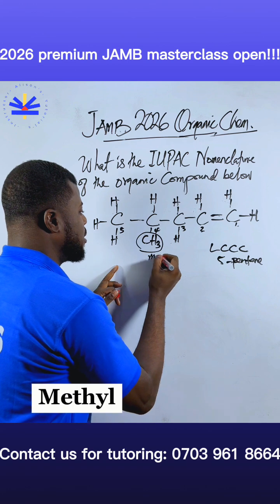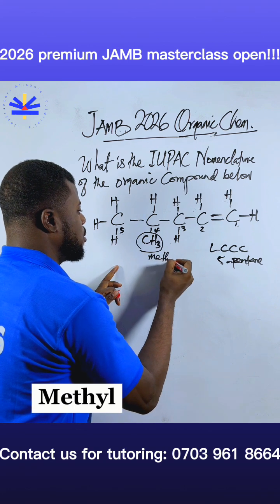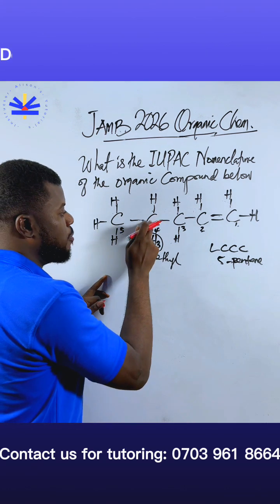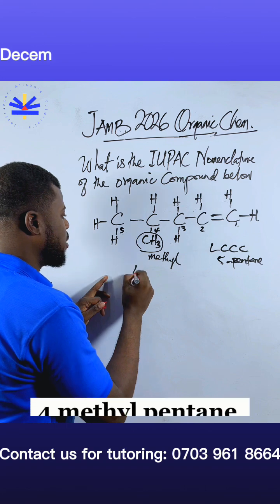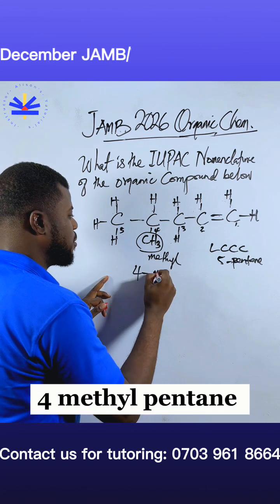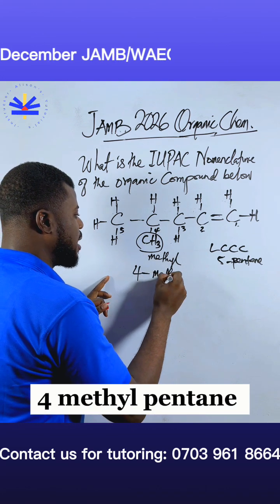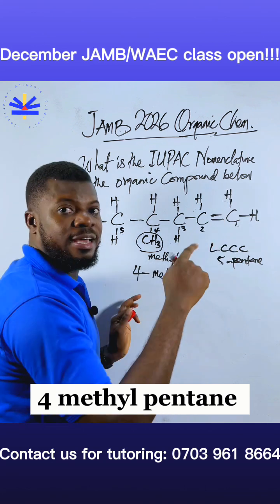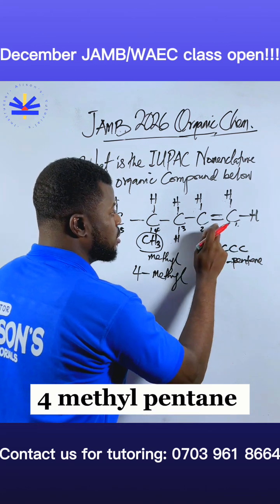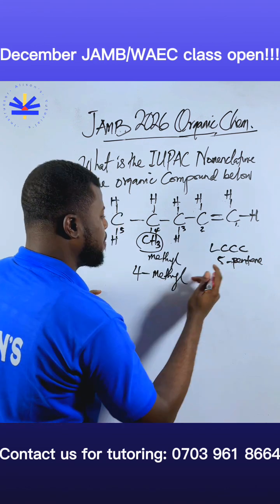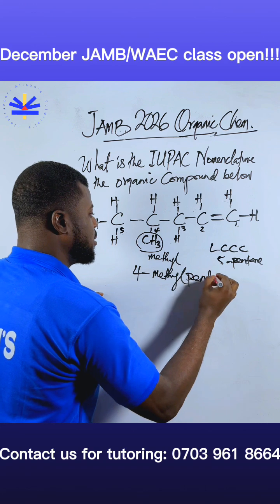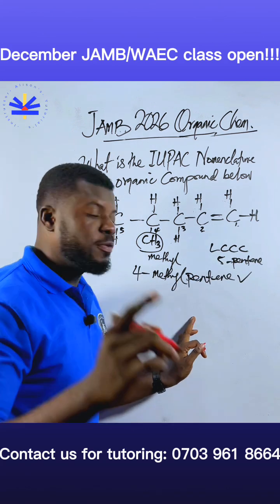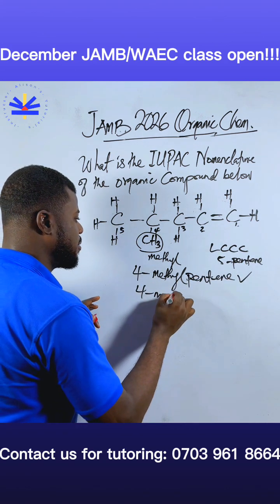This substituent is a methyl group, so the name includes 'four-methyl' because it is on carbon four. So you get four-methyl, then the five-carbon chain with the double bond gives us the alkene family — that is, pent-1-ene. The full name of this compound is 4-methylpent-1-ene.